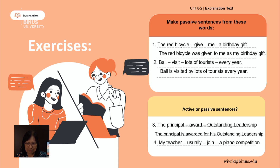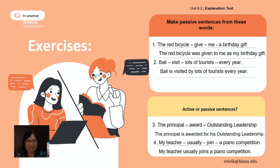The last sentence: 'my teacher,' 'usually,' 'join a piano competition.' The answer: 'My teacher usually joins a piano competition.' So it's an active sentence — 'usually' then 'joins.'